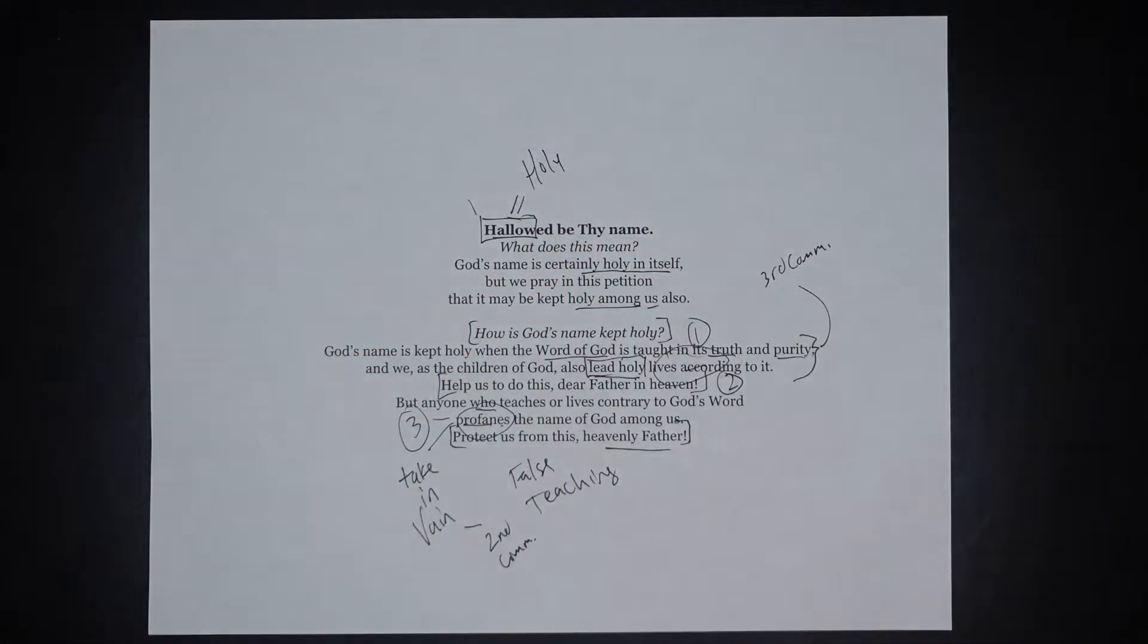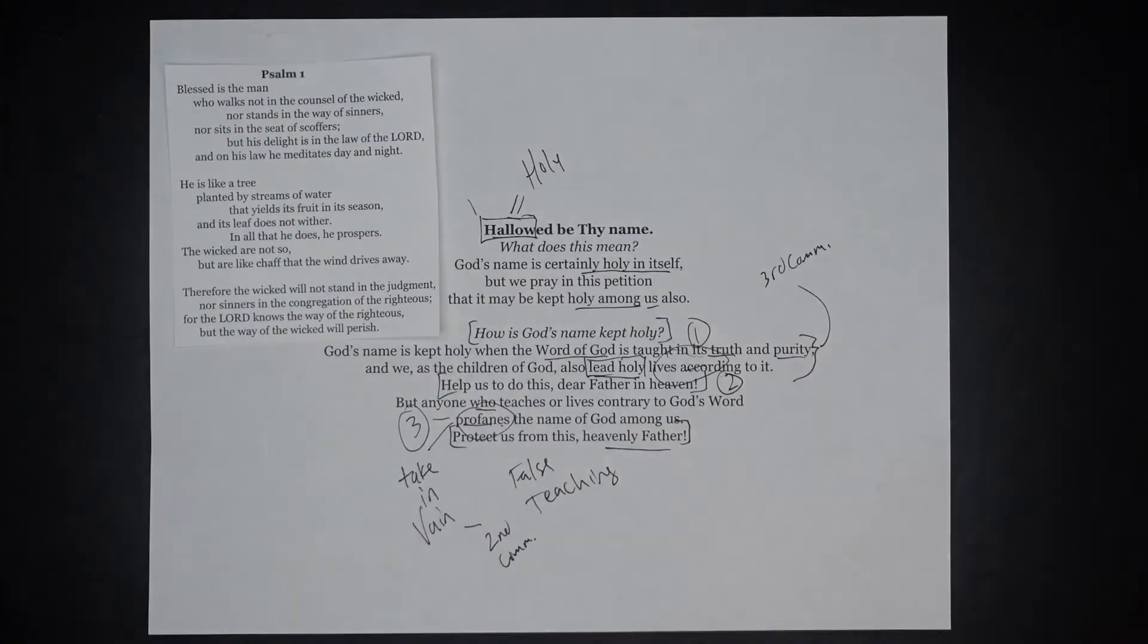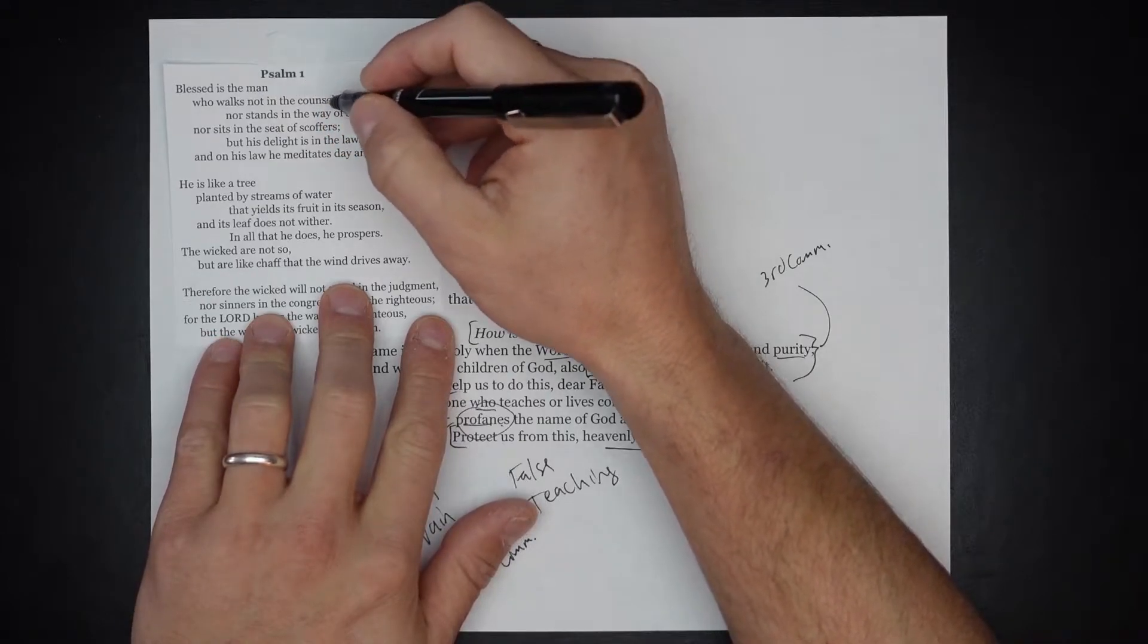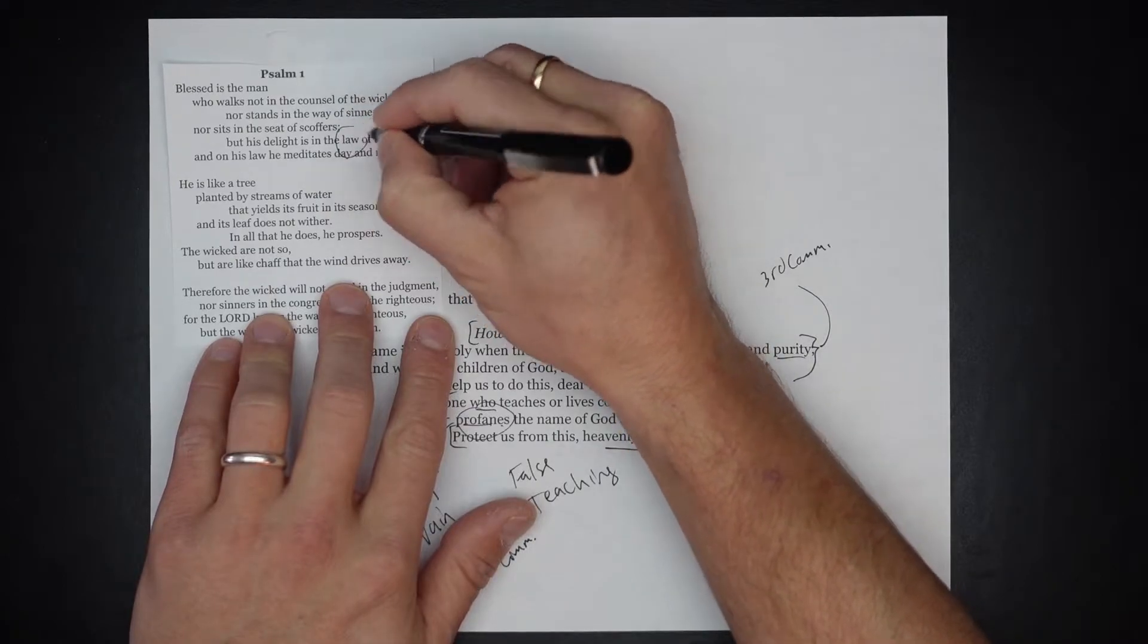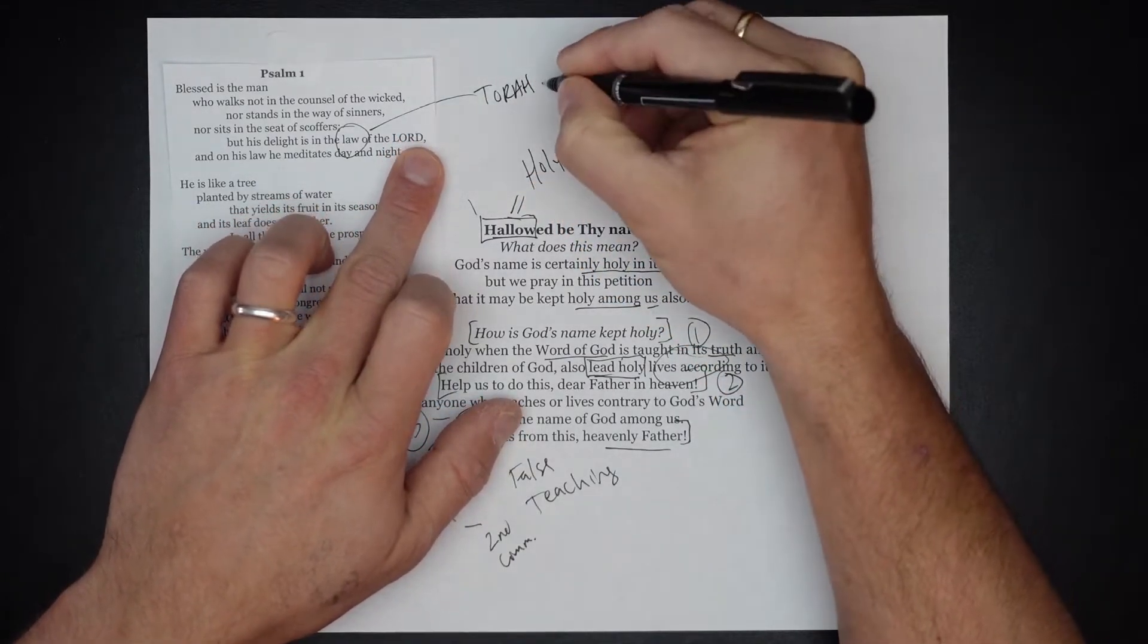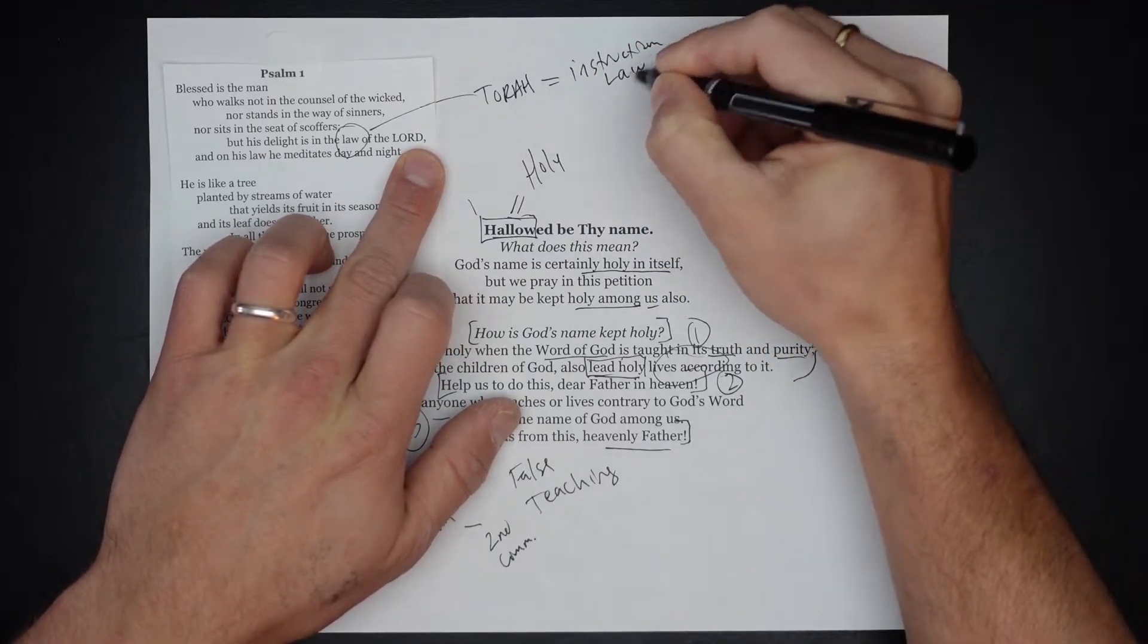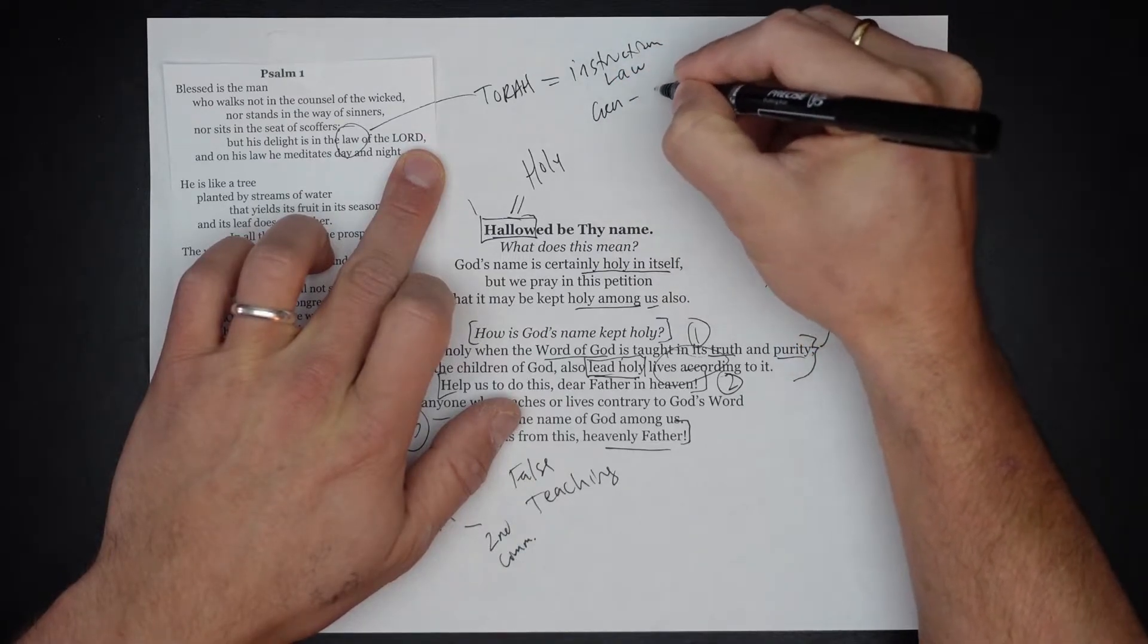A beautiful example of this is found in Psalm chapter 1. The very first psalm is lovely poetry to open up the psalter and this is what this psalm says. Blessed is the man who walks not in the counsel of the wicked nor stands in the way of sinners nor sits in the seat of scoffers, but his delight is in the law of the Lord. Now when it says law, the word in Hebrew is actually Torah, which is instruction. It also encompasses the law but it's also the name for the first five books of the Bible, Genesis through Deuteronomy.